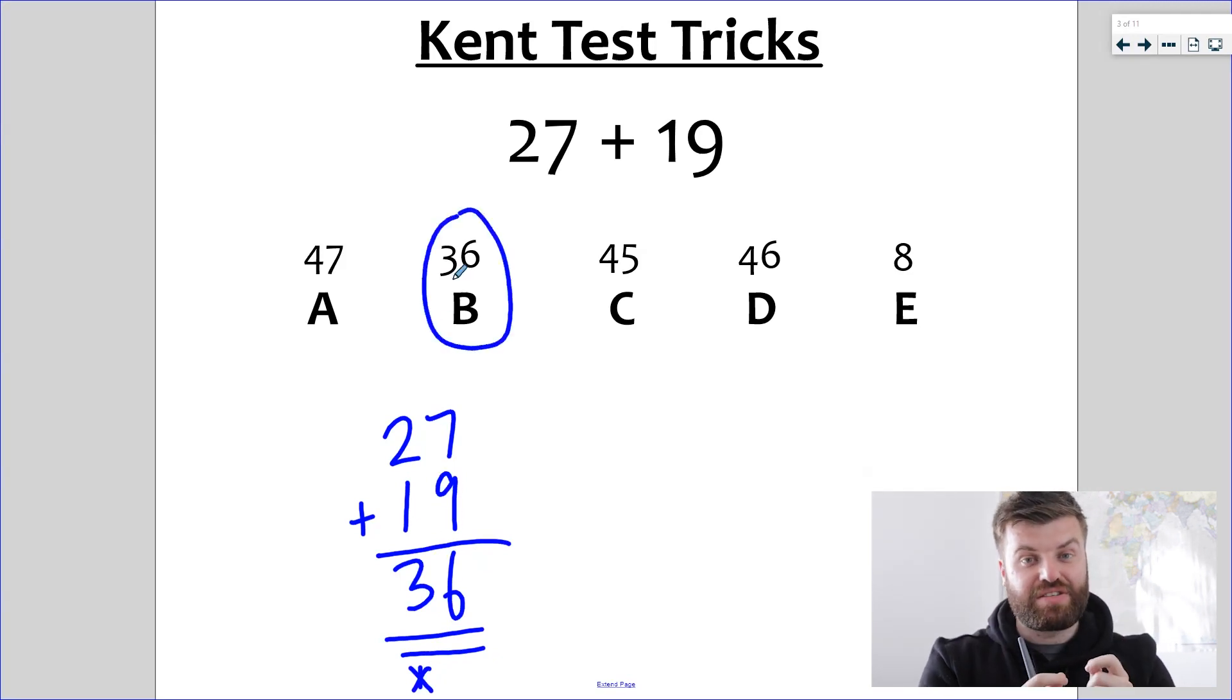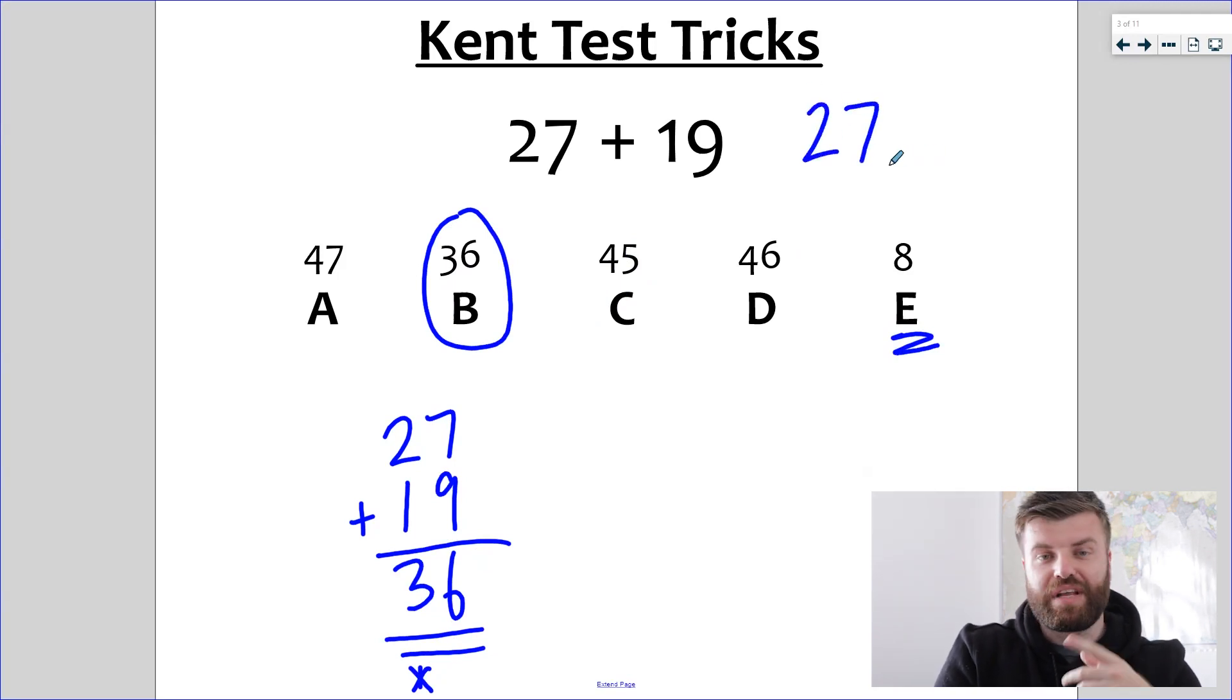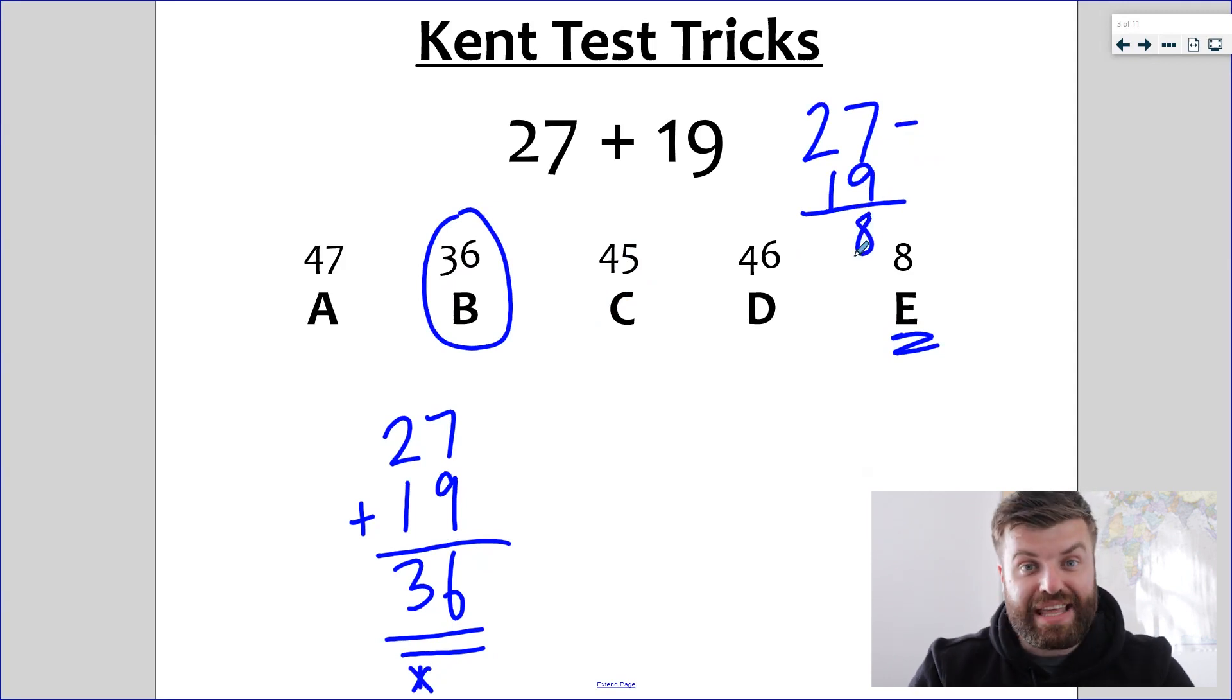They pick answers to try and guide you down the wrong path. Now, every answer here that isn't 46 is a trick option. For example, look at E. How can you get 8 using these numbers? Well, quite often, children will do the wrong operation. If you do 27 subtract 19, guess what answer you get? It's 8. And they will put that in there to try and trick you. It's your job to be aware of this, and this is especially the case when we look at time questions.